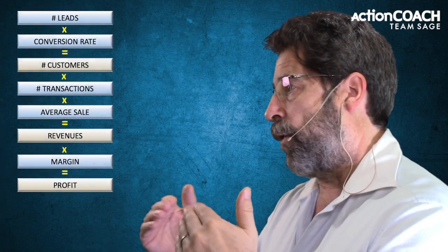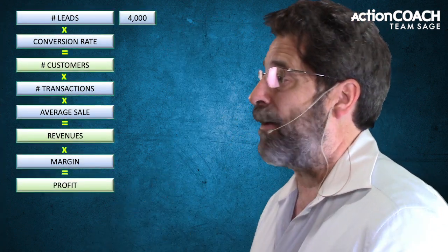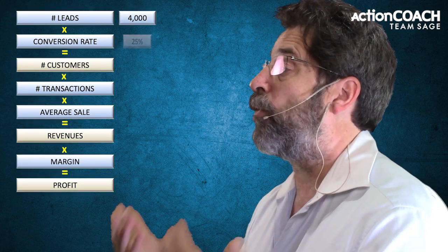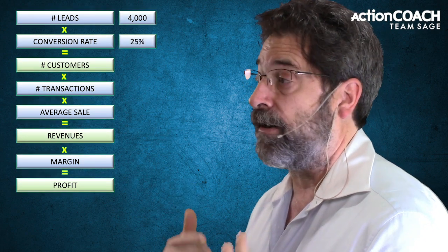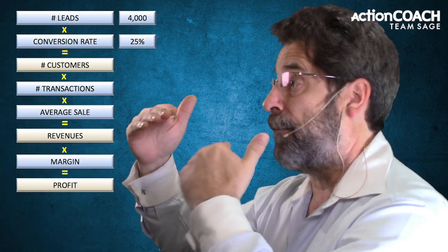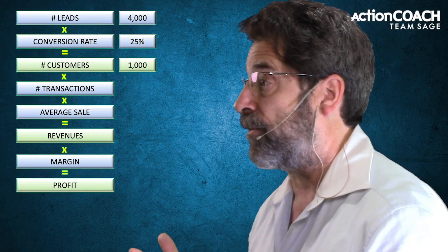So those five areas are the five ways that you can increase your profits. Let me throw in some numbers so you can get an idea of what I mean. If you have 4,000 leads and a 25% conversion rate, that would mean 25% of those 4,000 leads would become customers, giving you 1,000 customers.